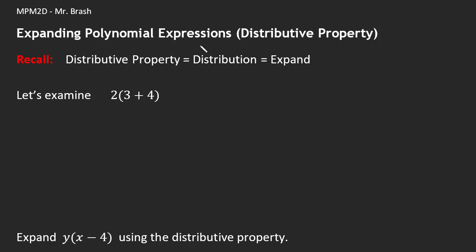We're going to take a look at expanding polynomial expressions, and in this particular one by polynomial I actually mean binomial where we've got a binomial times a binomial. As with most of my lessons, I'm going to start with a little recall here. The distributive property is a fancy way of saying distribution, which is a fancy way of saying expand. A lot of times you're going to see the question say expand and then it'll even say simplify, because after we expand, sometimes there's like terms to collect. So when we say simplify, that really means collect your like terms.